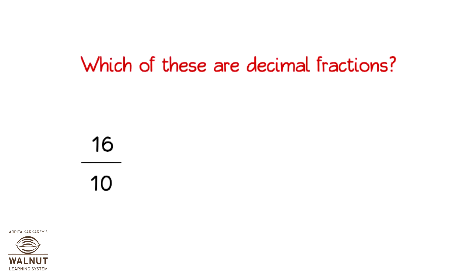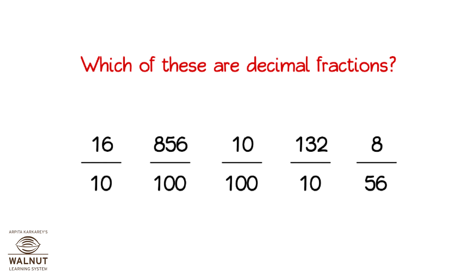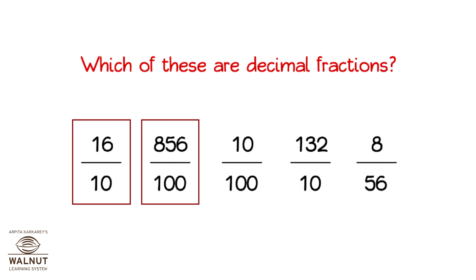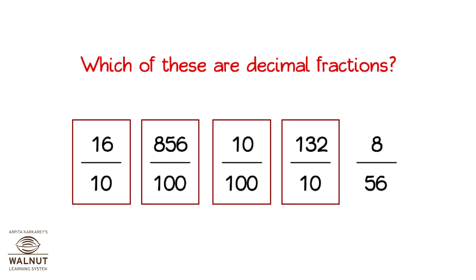Look at all these fractions. Which of these are decimal fractions? The denominator has to be either 10, 100, 1000, 10,000, or some such multiple of 10. Denominator 10 — decimal fraction. Denominator 100 — decimal fraction. Denominator 100 — decimal fraction. Denominator 10 — decimal fraction. Denominator 56 — not a decimal fraction. So four fractions are decimal fractions.